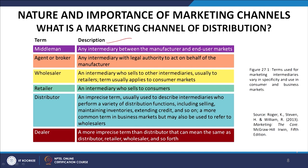A middleman is any intermediary between the manufacturer and the end-user market. Agents and brokers are intermediaries with legal authority to act on behalf of a manufacturer. A wholesaler supplies to other intermediaries, usually retailers. A retailer sells directly to the consumer. A distributor performs a variety of distribution functions including selling, maintaining inventories, and extending credit. A dealer is a more imprecise term that can mean the same as distributor, retailer, or wholesaler.